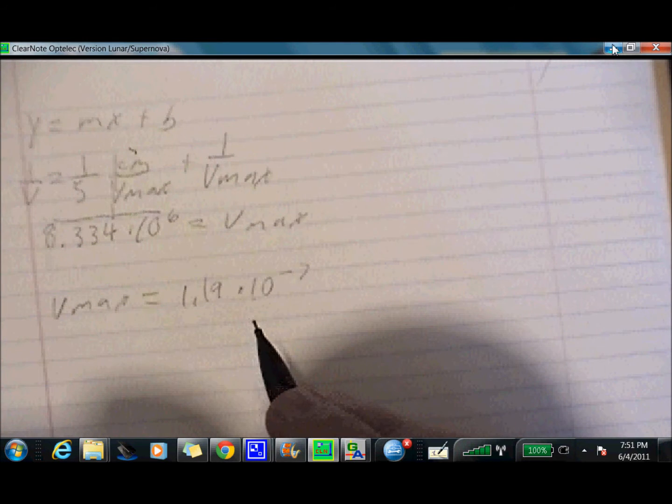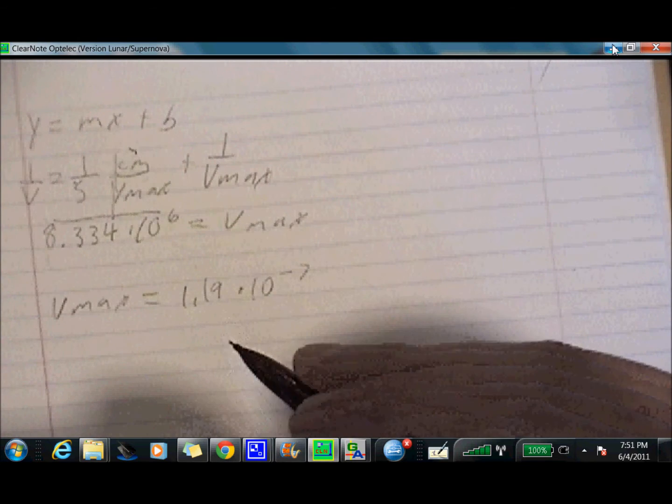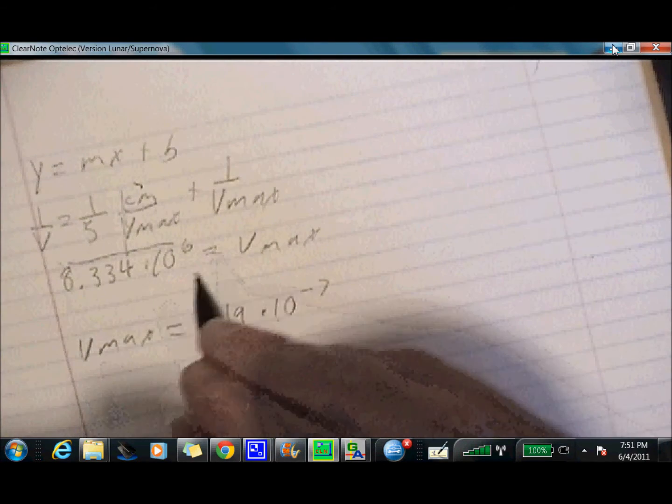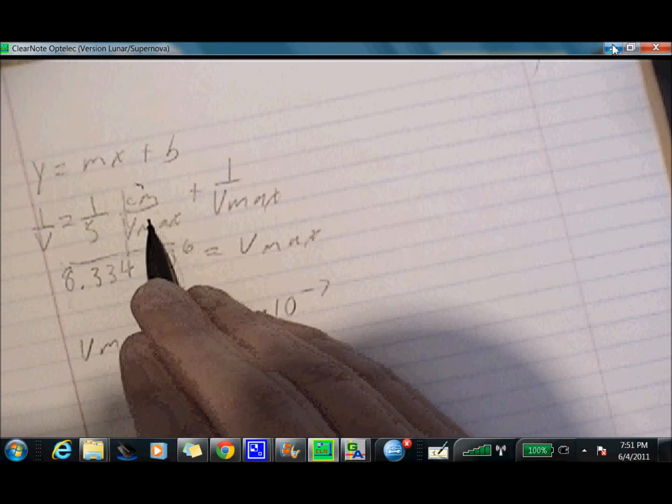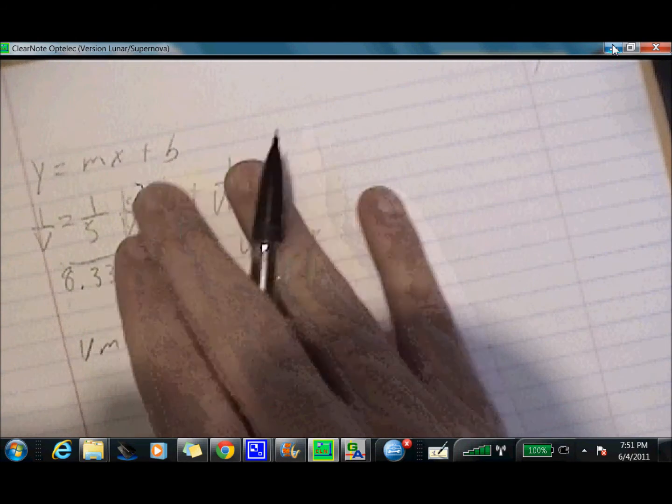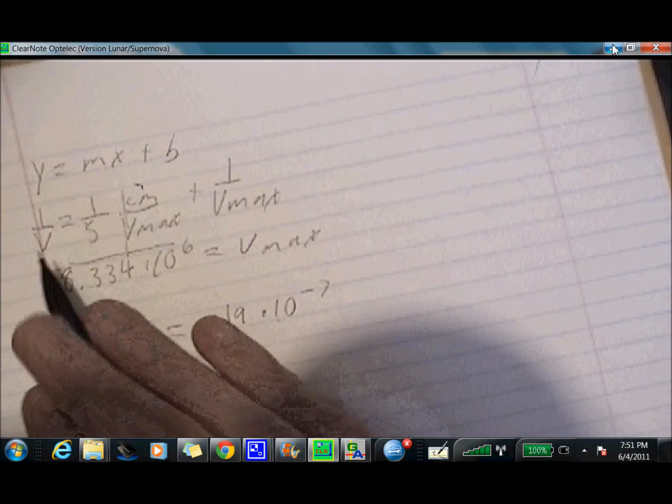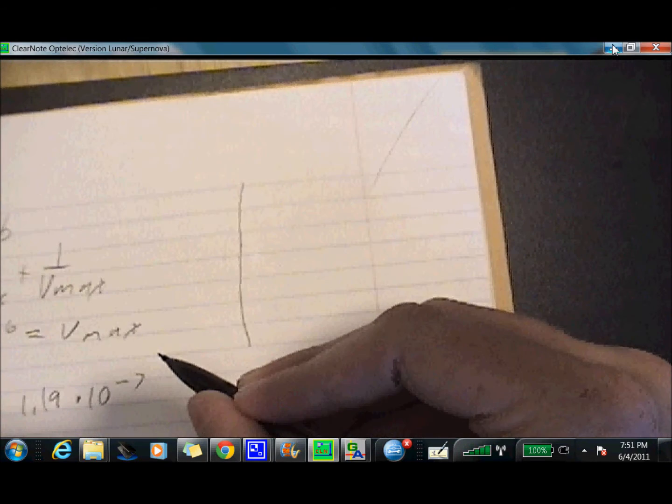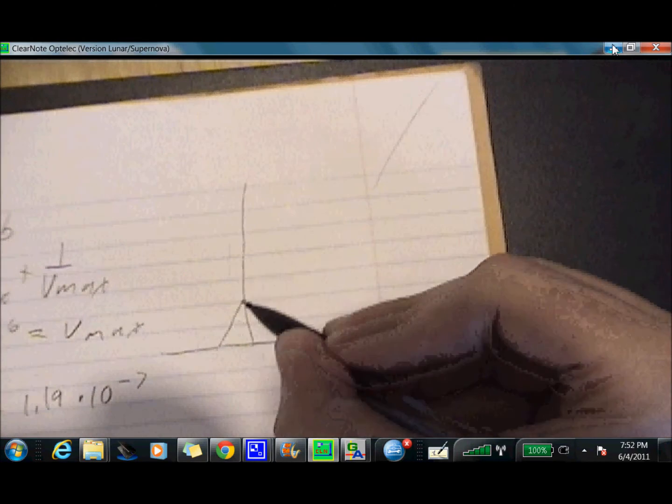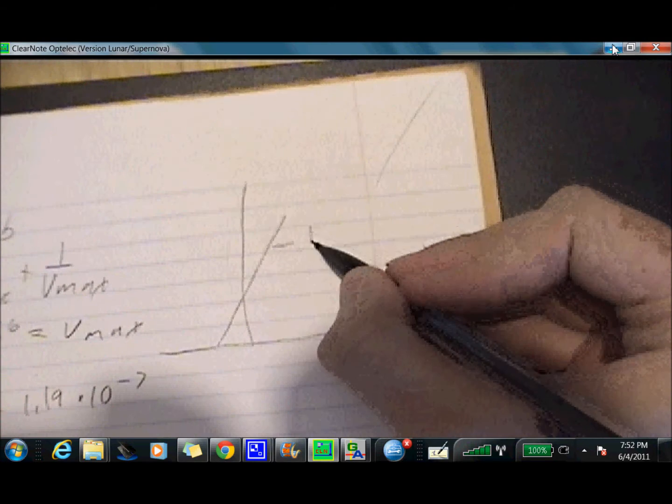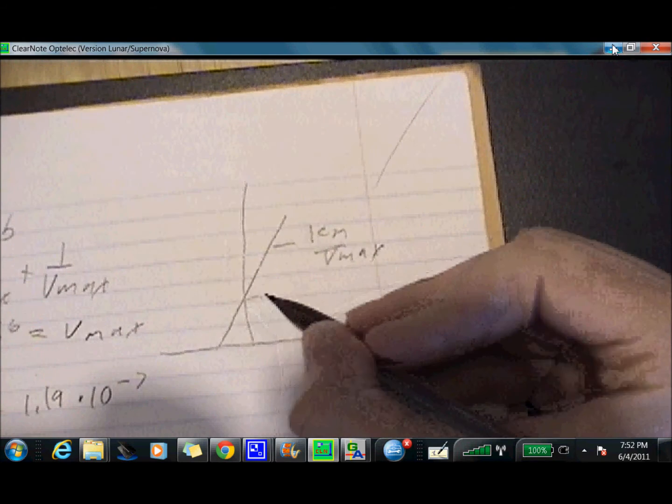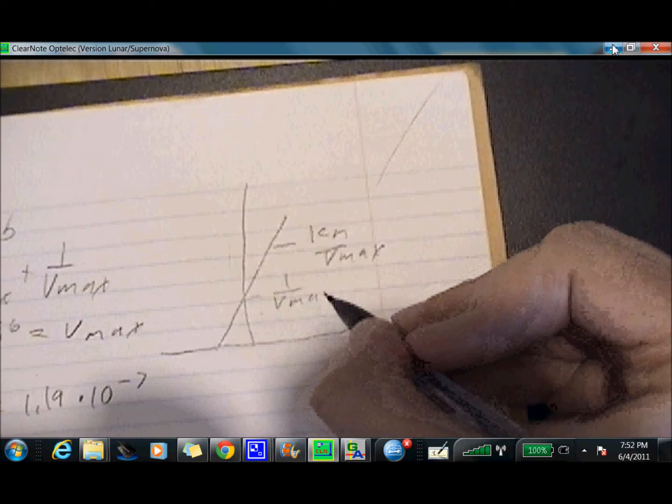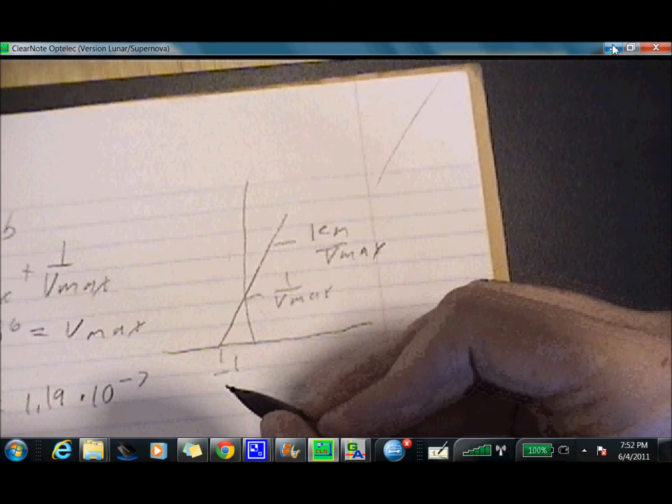The next thing to do is to go ahead and find our KM. As we can see from here, KM divided by Vmax is going to equal this. So we can basically find out where X intercept is. So if you look at a Lineweaver-Burk plot, it's very, very critical to know what everything is and how to find stuff. So your slope is going to equal KM over Vmax. Y intercept is one over Vmax. And this is negative one over KM.